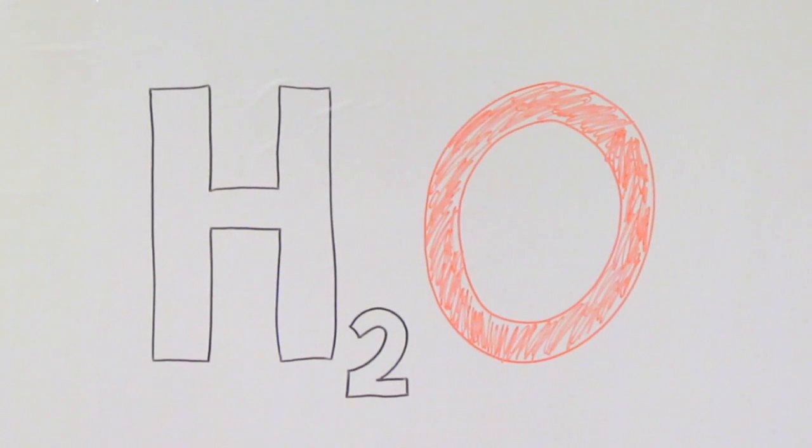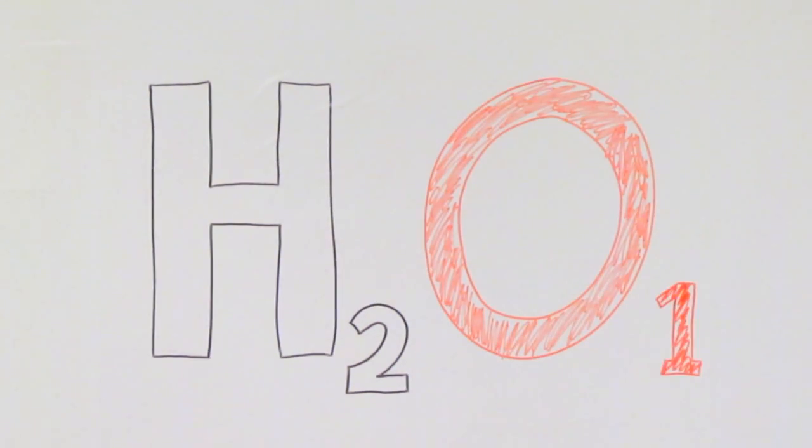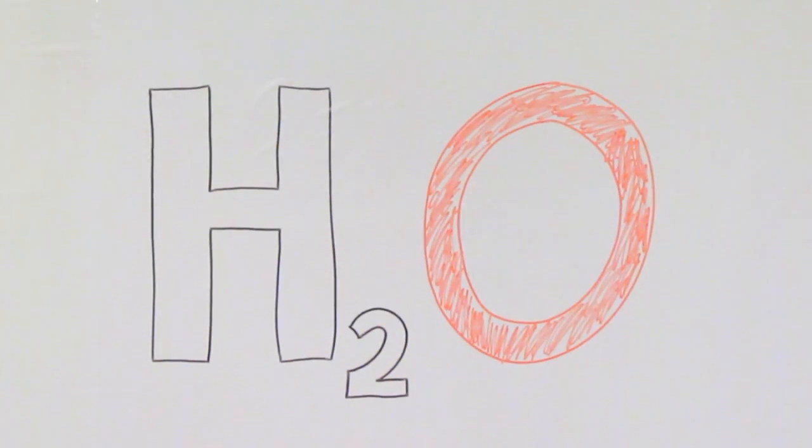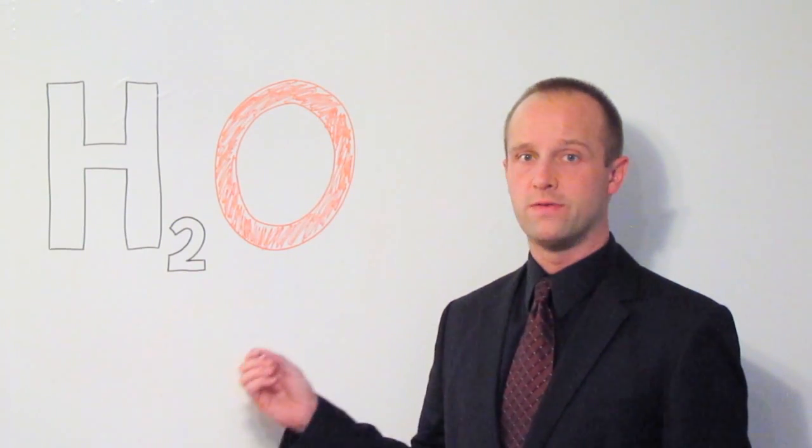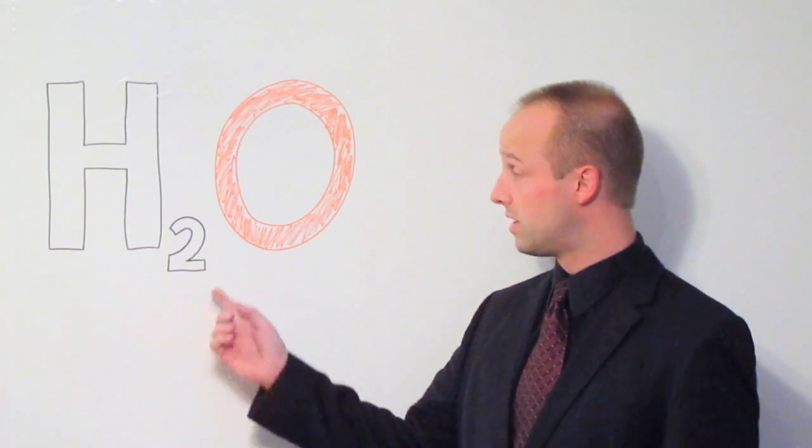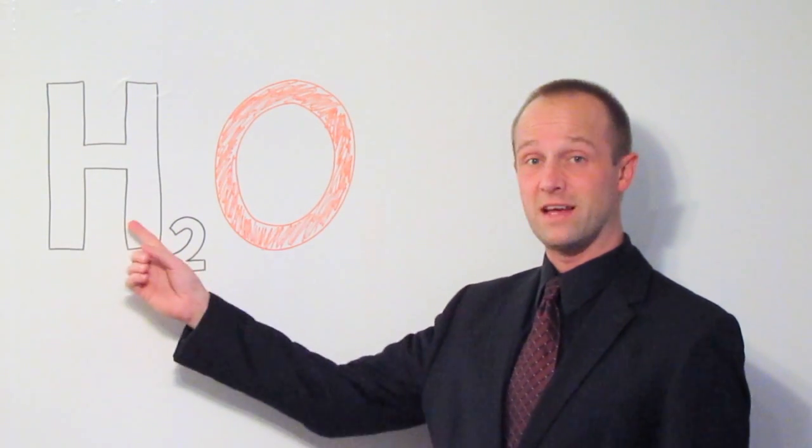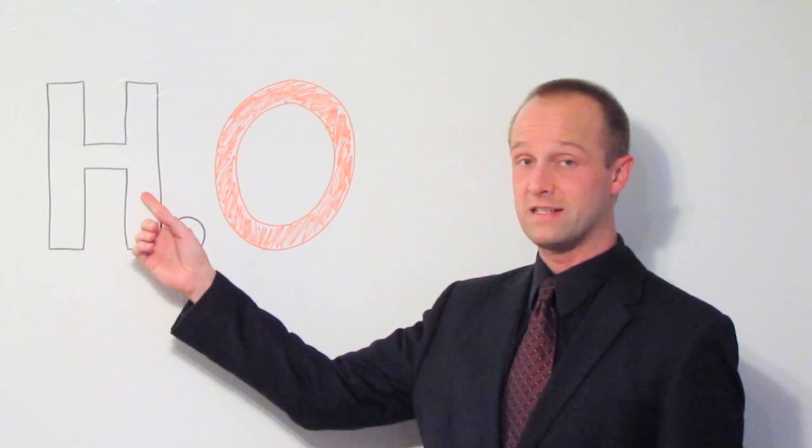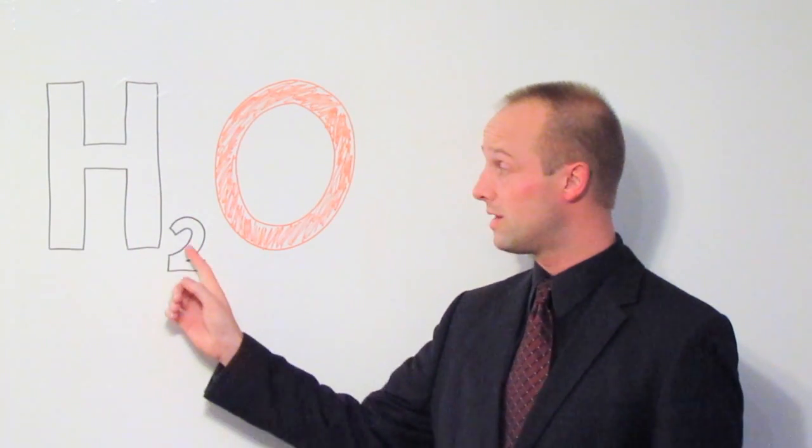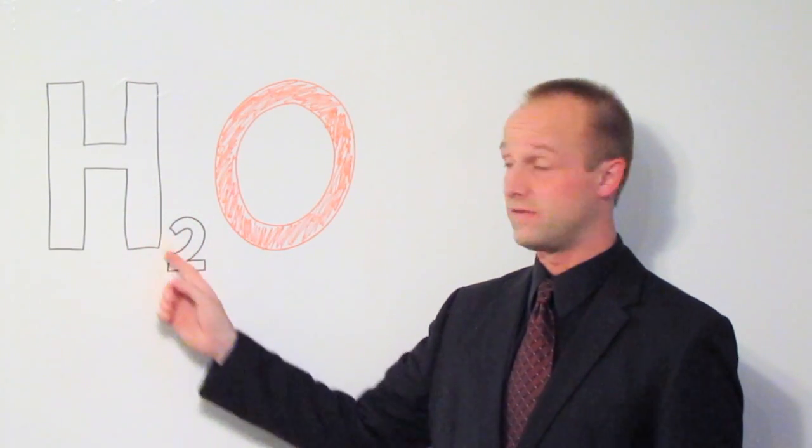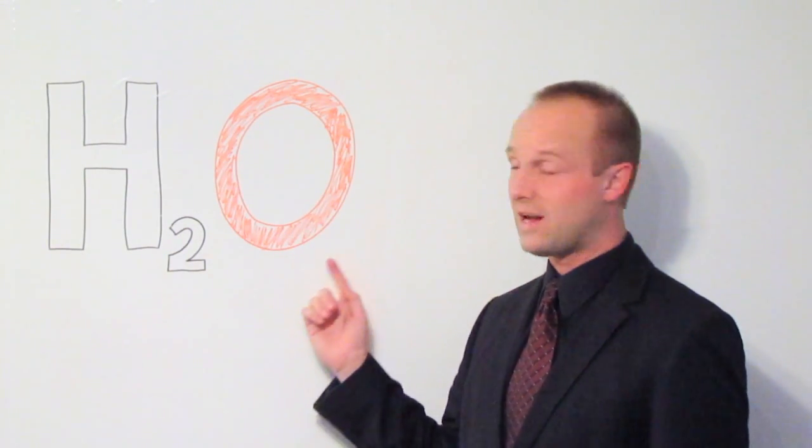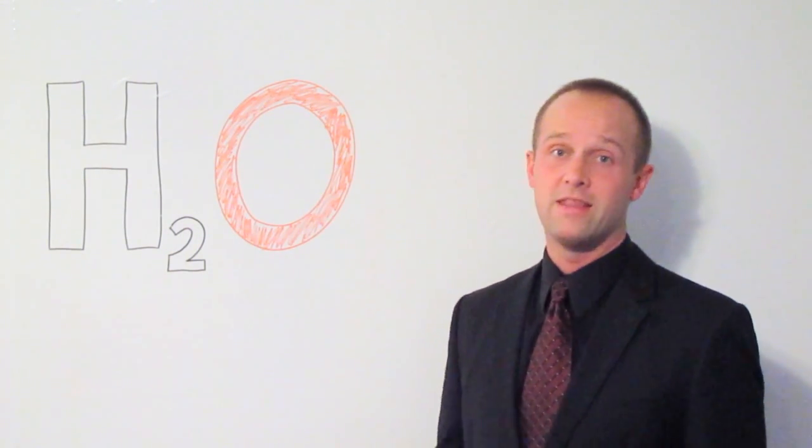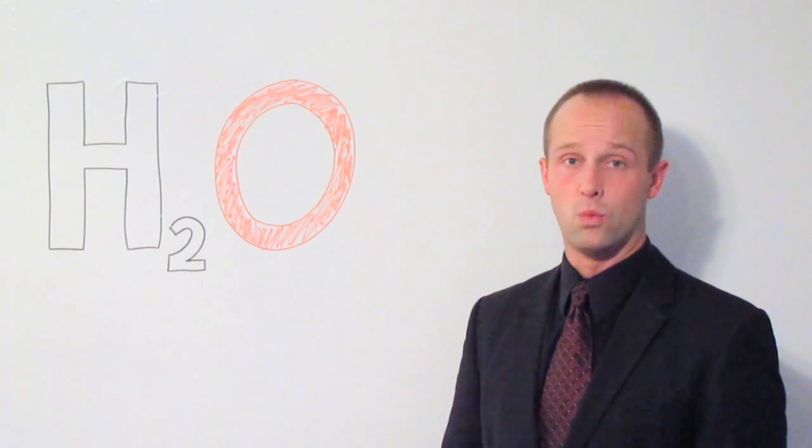Now chemists save themselves a little bit of time by not bothering to write that number one in. If you've just got the letter by itself, then there's just one of that atom. So this formula just tells you how many of each type of atom you've got in that particular molecule. The number after the letter tells you how many of that letter you've got. It only relates to the letter directly in front of it, so we've got two hydrogens, oxygen without a number there, that just means that there's one oxygen, and this relates to the structure of a water molecule.